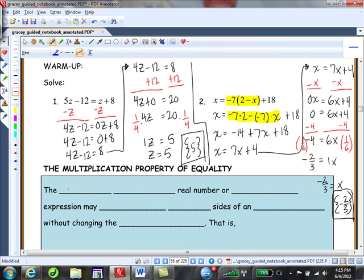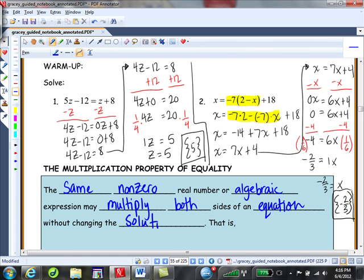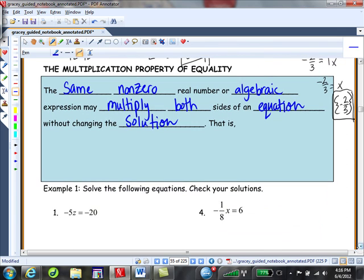The multiplication property of equality: the same non-zero real number or algebraic expression may multiply both sides of an equation without changing the solution. That is, if A is equal to B and we don't want C to be 0 this time, then A times C is equal to B times C.